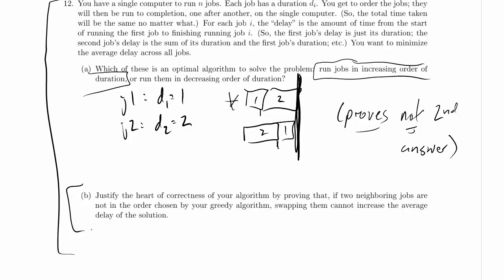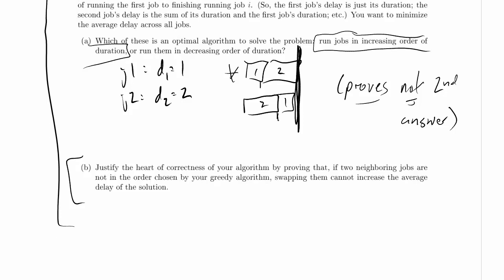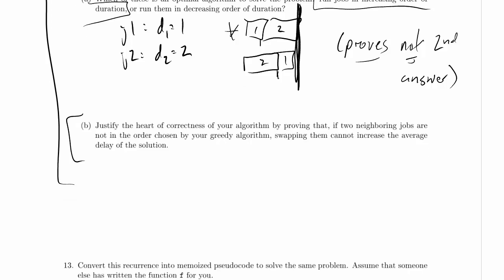By proving that if two neighboring jobs are not in the order chosen by the greedy algorithm, swapping them cannot increase the average delay of the solution. So what we've got then is a situation like this. There's a whole bunch of jobs that are running. So we're not going to say this time that we know these are the only two jobs. But we do have two jobs. They're right next to each other. One of them has a longer delay than the other.